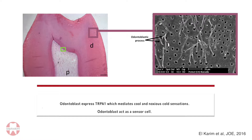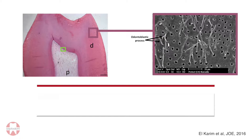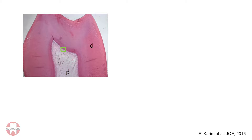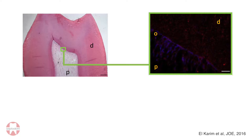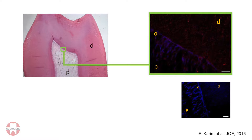In a healthy tooth, the expression of this TRP receptor is low, as shown on this slide — the red staining — with the blue serving as a control.